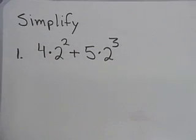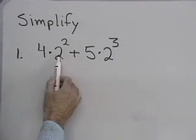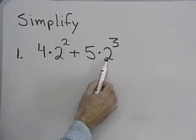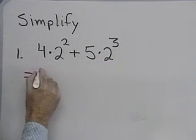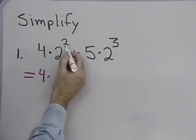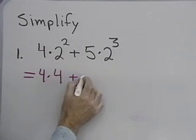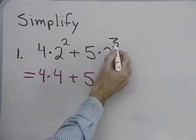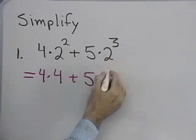According to our rule for the order of operation, what we want to do is simplify each part that has an exponent on it first. So this would be 4 times 2 squared is 4 plus 5 times 2 cubed. That's 2 times 2 times 2 is 8.